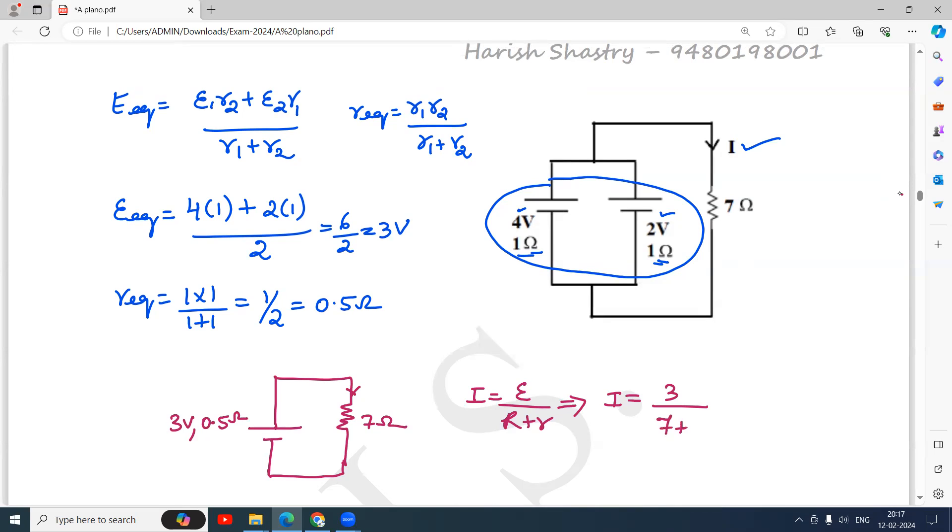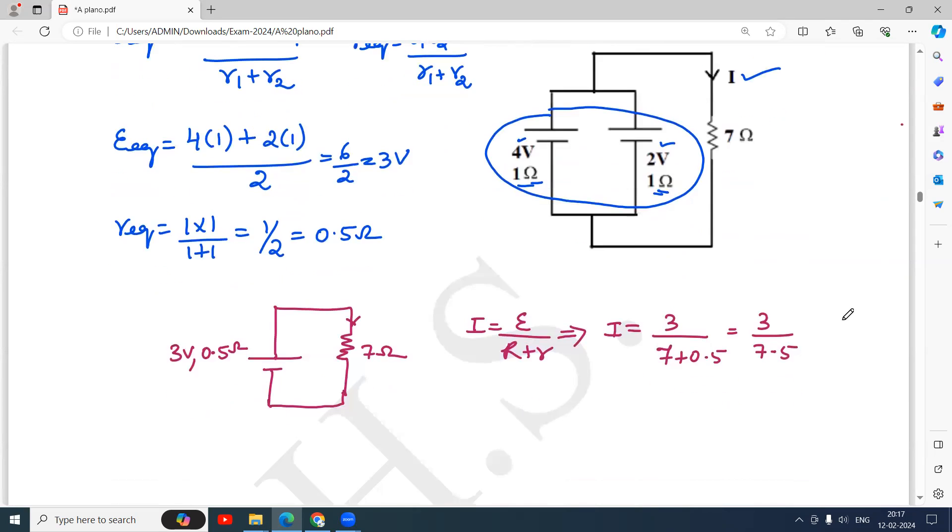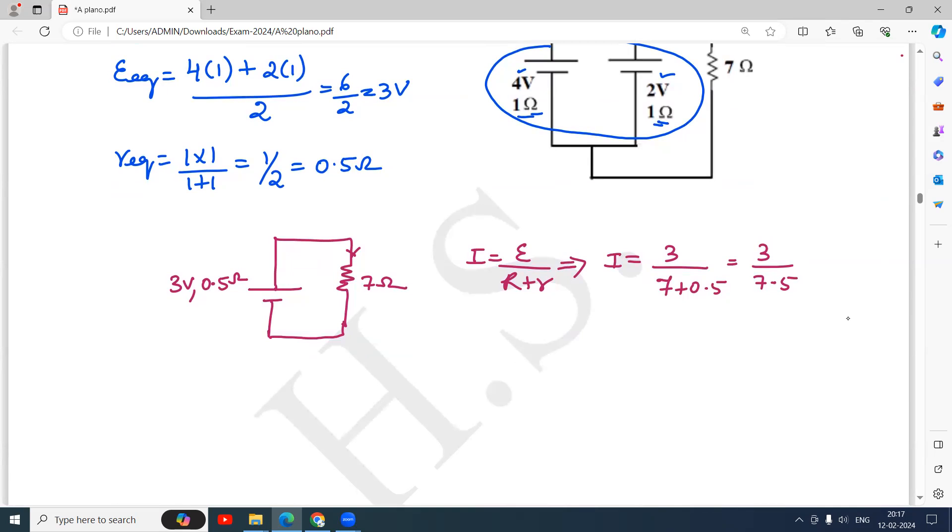7 plus 0.5, so that becomes 3 by 7.5. I will multiply and divide by 2 so that I don't have fractions in the denominator. I is equal to 6 by 15. I think I can divide it by 3, 2 by 5. So it is 0.4 amperes, 0.4 amperes. Simple problem, thank you.